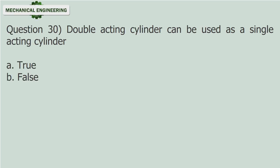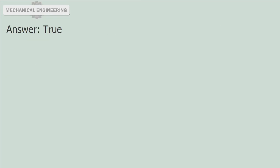Question 30: Double acting cylinder can be used as a single acting cylinder. A. True. B. False. Answer: True.